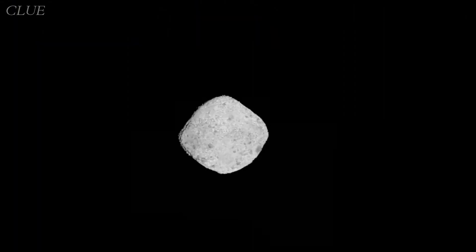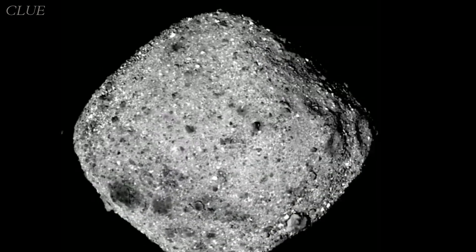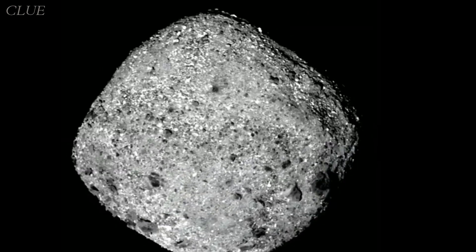Bennu is a carbon-rich asteroid approximately 500 meters in diameter. Bennu is like a time capsule from the very beginning of the solar system.